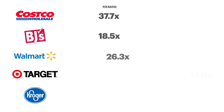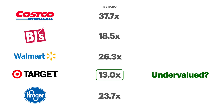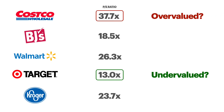So let's take a look at Costco's closest competitors including BJ's Wholesale, Walmart, Target, and Kroger. They each trade at different P/E ratios. When comparing straight across, Target looks undervalued as it is trading at the lowest P/E ratio, while Costco looks overvalued as it is trading at the highest.